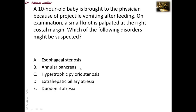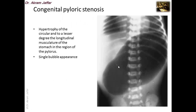Annular pancreas, as we will see in a moment, presents with bilious vomiting in most cases. Hypertrophic pyloric stenosis is actually the condition that should be suspected here, because of the projectile vomiting that is non-bilious and because of the presence of the knot below the right costal margin. Extrahepatic biliary atresia will not present like this — it presents with jaundice. Duodenal atresia in many cases presents like annular pancreas, with bilious projectile vomiting. So the best choice here is hypertrophic pyloric stenosis.